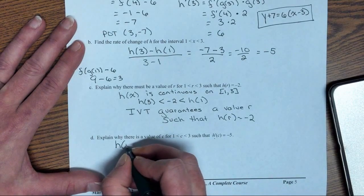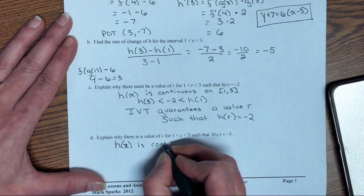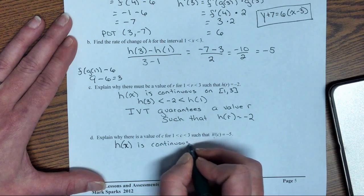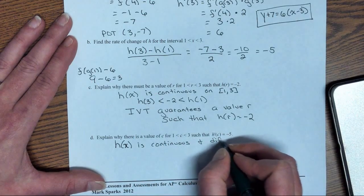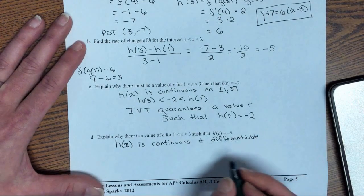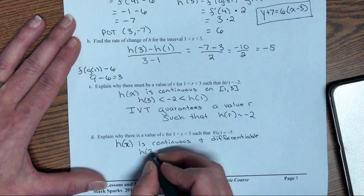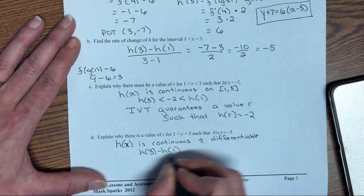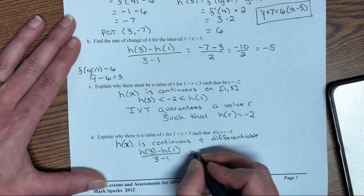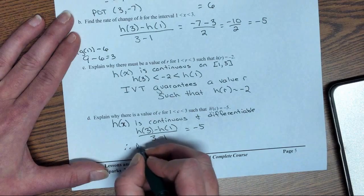This is asking if there's a point where the tangent line would be at -5. Well, h(x) is continuous and differentiable, and h(3) minus h(1) equals -5. Therefore, MVT guarantees it.